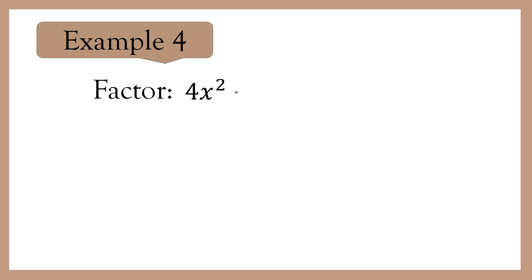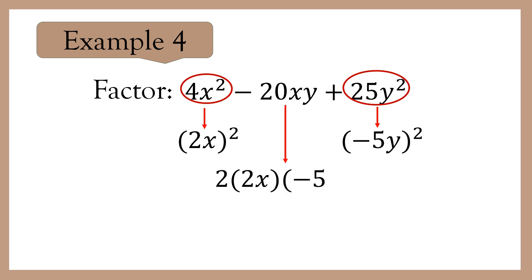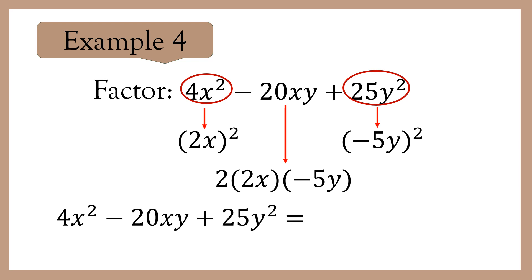Example 4: factor 4x squared minus 20xy plus 25y squared. 4x squared and 25y squared are both perfect squares, since 4x squared is the square of 2x and 25y squared is the square of negative 5y, because the middle term is negative. The middle term negative 20xy should be 2 times 2x times negative 5y: 2 times 2x is 4x, times negative 5y is negative 20xy. Therefore, the factors of 4x squared minus 20xy plus 25y squared is 2x minus 5y, quantity squared.